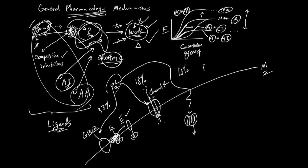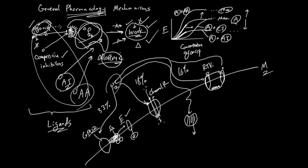The next category is receptor tyrosine kinases, or RTKs. A ligand can bind to an RTK receptor, and binding activates this receptor. Another nearby receptor can also be activated, and when this happens, these two receptors dimerize to become one. The tail that results from this dimerization becomes the enzymatic site. This receptor has 'kinase' in its name because it adds phosphate groups to other proteins. RTKs account for about 3% of all pharmaceuticals.